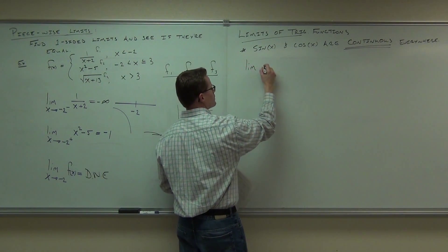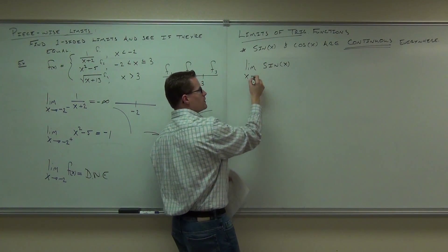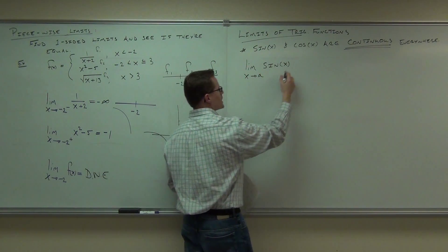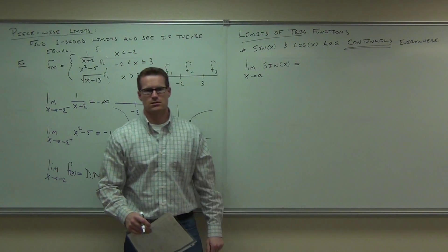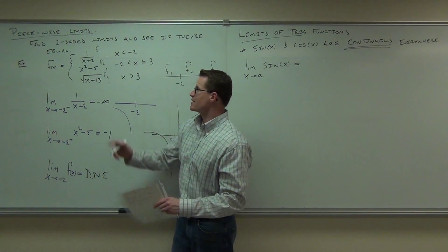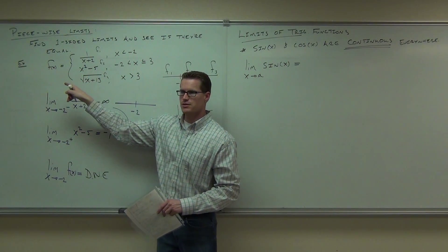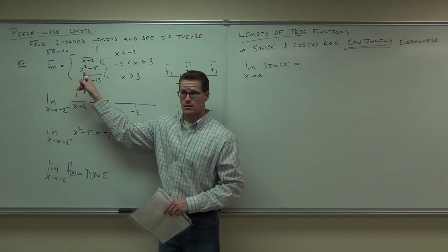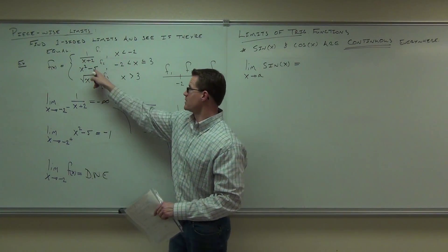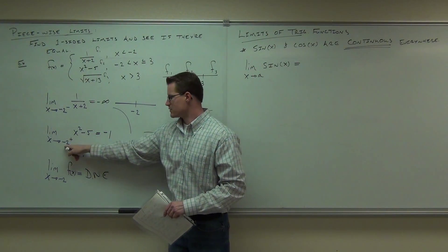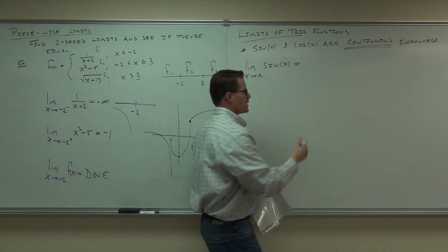Then the limit of sine of x as x approaches a is, what do you think? It's not a. You wouldn't say the limit as x approaches 5 of x squared minus 5 is 5. What would you do to find it? Plug in a. You would plug it in. So to find the limit of this, what would we do? We plugged in. It's what we got after we plugged it in. So it's not a. What is it? Sine of a. Absolutely.